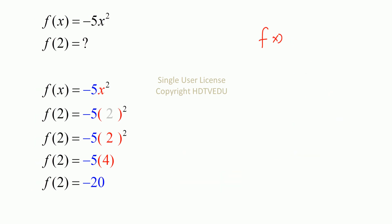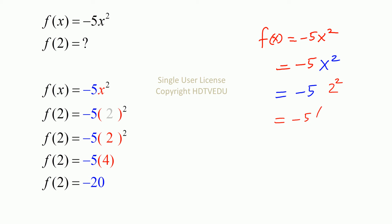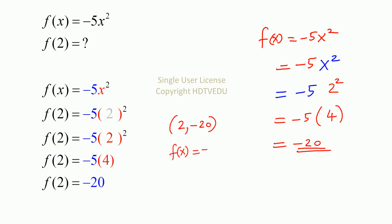What is the value of the function at x equals 2? We start with f of x equals negative 5 x squared. At the position of the x, we substitute 2. So this is negative 5 times 4, and that is negative 20. Our point is (2, negative 20). Our function is negative 5 times x squared.